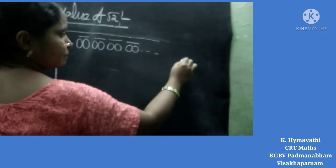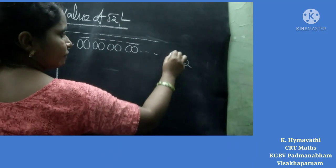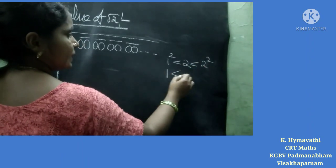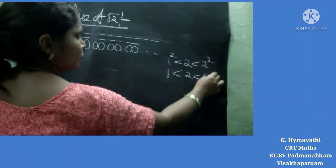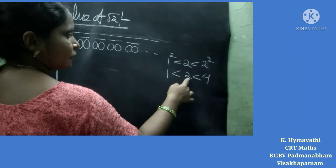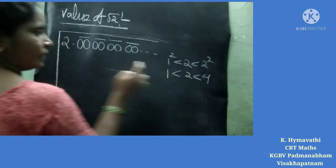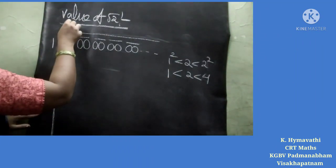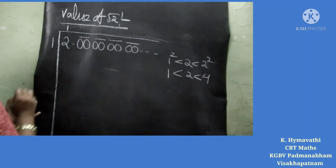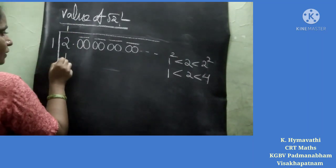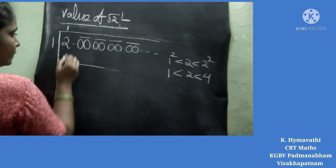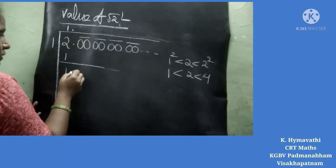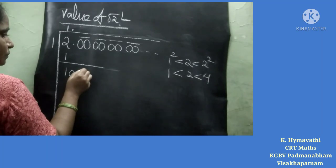Here, 2 lies between 1 squared and 2 squared, meaning 1 is less than 2 is less than 4. Since 2 is nearest to 1, we write 1 here. One times one is 1, giving a remainder of 1. After that, put a decimal point and carry out the zeros.